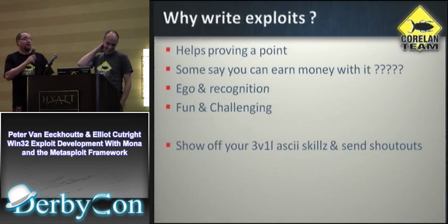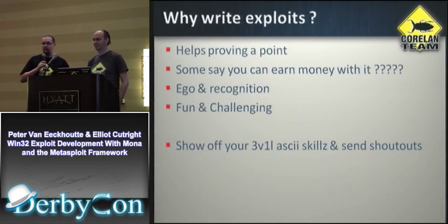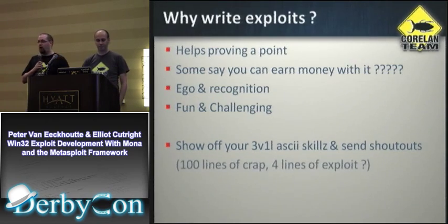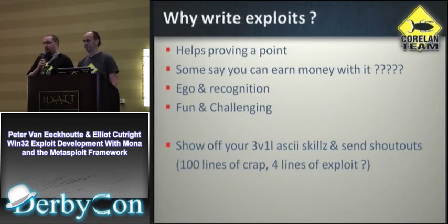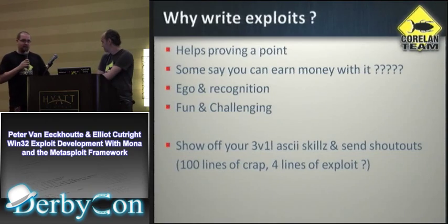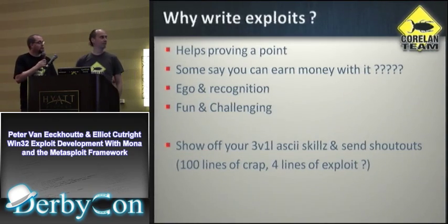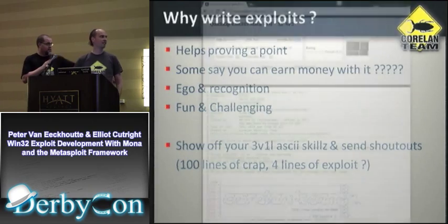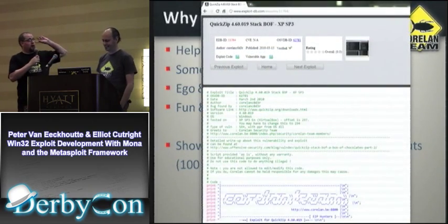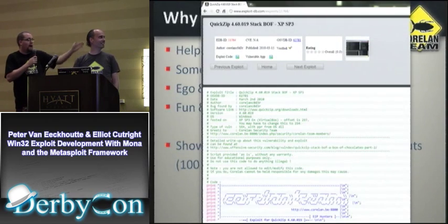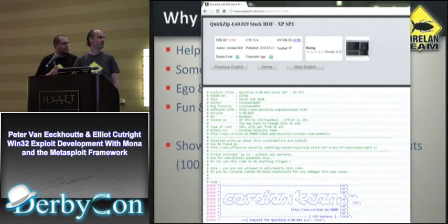Some people really like showing off their ASCII skills. If you go on Exploit Database, you can sometimes find exploits that are 100 lines of sending greets to friends with an awesome title, and then it's four lines of exploit. The Coreland team throws tons of crap at the top of their exploits. As you can see there's no code there — we haven't even started the exploit and we've got like 70 lines. We've got to quit that, Peter. We've got to stop doing that.